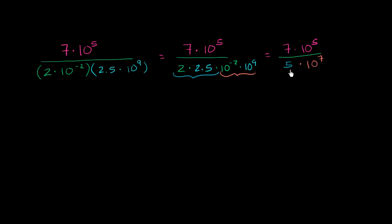And now we can view this as being equal to 7 over 5, times 10 to the fifth over 10 to the seventh.